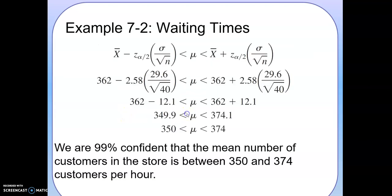Here's what the population mean would look like. Use the same formula. We have the sample mean of 362. The Z is 2.58, that's 99% confidence. The population standard deviation is 29.6, and the sample size is 40. You plug in the formula and you arrive at the answer. We are 99% confident that the mean number of customers in a store is between 350 to 374 customers per hour. We never say 100% confident because we don't have all the data. This number is the best estimate from these 40 samples that we have.